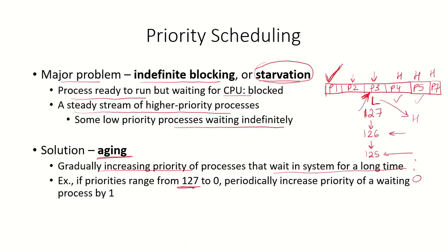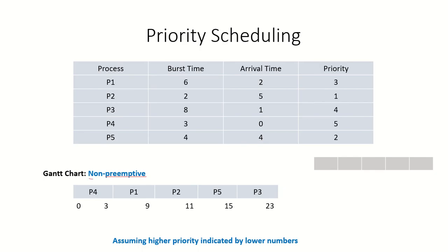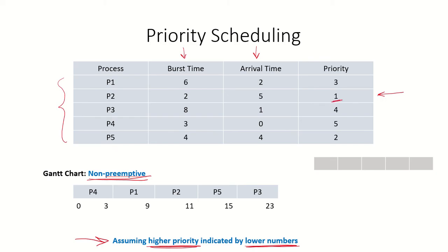Let's take an example of non-preemptive priority scheduling with 5 processes, given their burst times, arrival times, and priorities. A higher priority is indicated by a lower number, so P2 with priority 1 is the highest priority process.